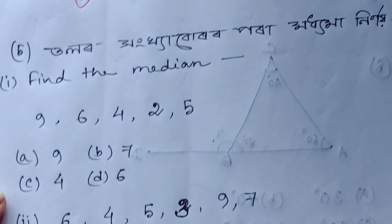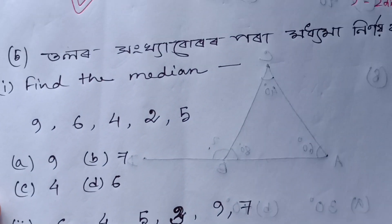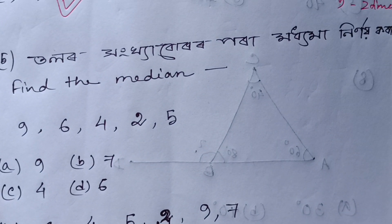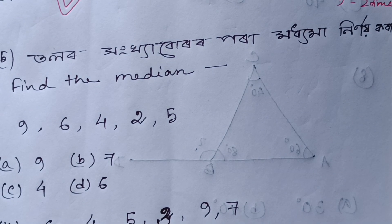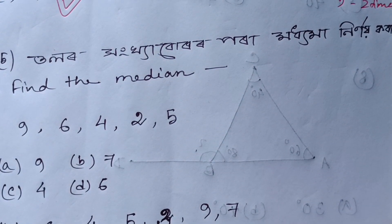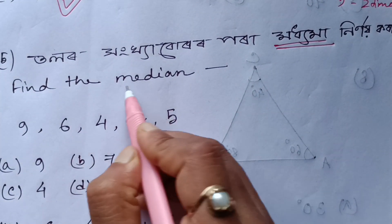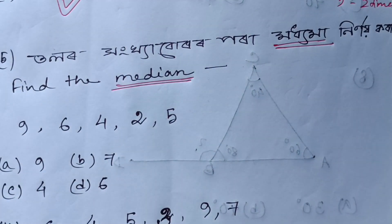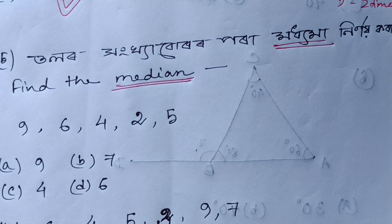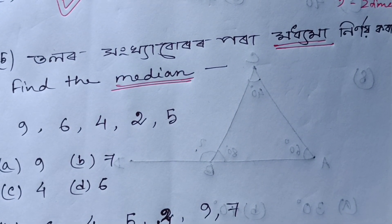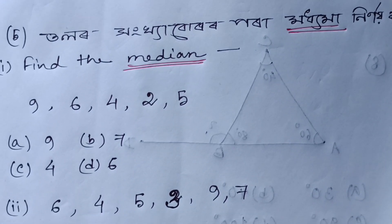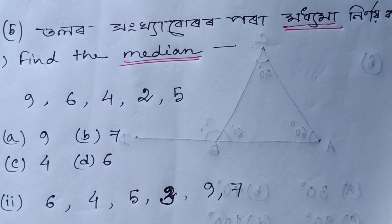Got it? Next question. Find the median. In English it is called median, and it means the middle value. This is easy. Let me show you. The numbers are: 9, 6, 4, 2, 5.